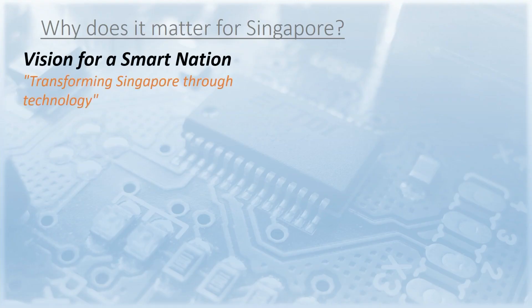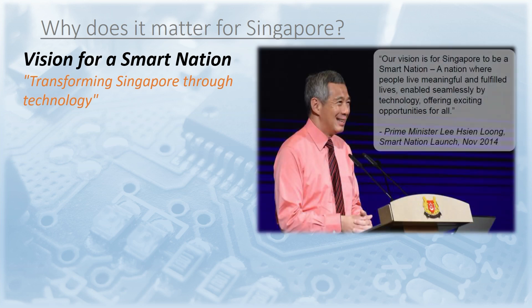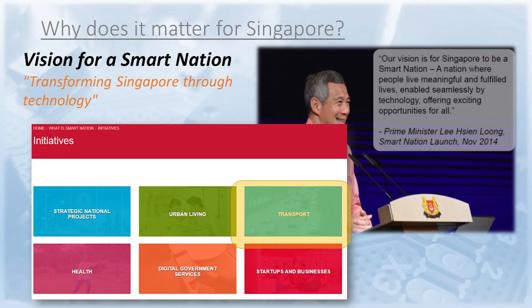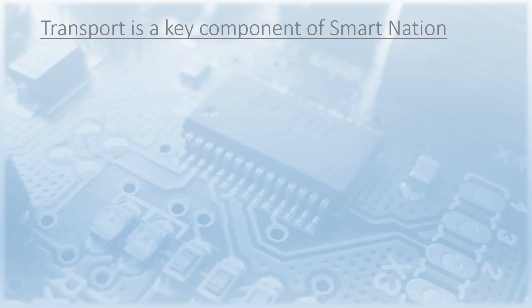But why is this topic important for Singapore? A few years ago, Prime Minister Lee Hsien Loong introduced the Smart Nation initiative as a way of transforming Singapore through technology. Specifically, he said: our vision is for Singapore to be a smart nation — a nation where people live meaningful and fulfilled lives, enabled seamlessly by technology, offering exciting opportunities for all. It turns out that one of the six pillars of Smart Nation is transport, of which vehicles and modern mobility are an integral component.